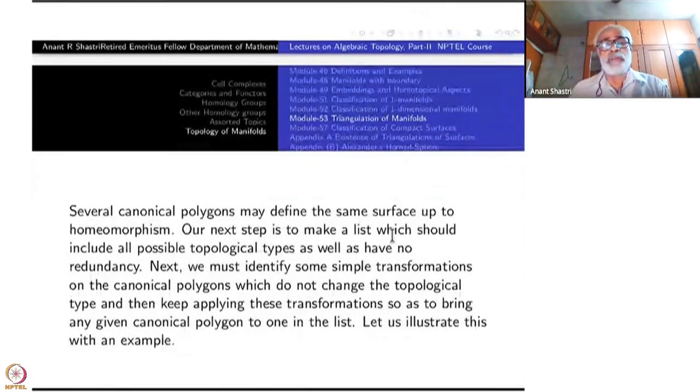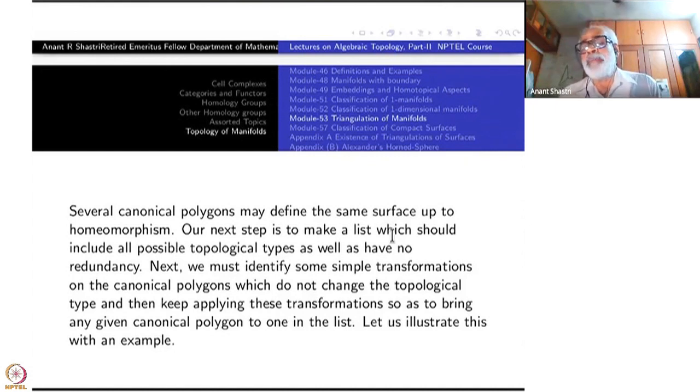Several canonical polygons may define the same surface. What we have so far said is from canonical polygons, the set of canonical polygons to the triangulated manifold, two-dimensional manifold, there is a surjection. Is it injective? No. In what sense? Whatever sense. That is the meaning of this. Namely, several of them may define the same surface. And that is why there is a problem. Otherwise, the problem was over. It would have gone home.